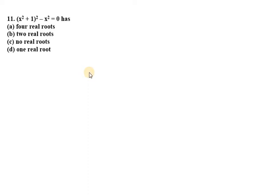Hello everyone, let's start with question number 11. It says x square plus 1 whole square minus x square equals 0 has four real roots, two real roots, no real roots, or one real root.